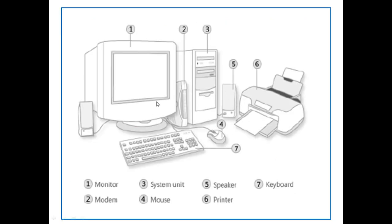This diagram shows the various components of a digital computer. One is a monitor, which is an output device. Another is a modem, and this is called the system unit — in regular terminology this is called the CPU. Other components shown are the mouse, speaker, printer, and finally the keyboard.